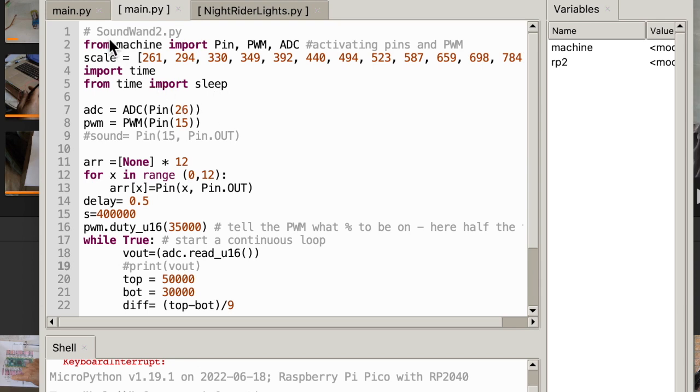Well, here we see the Thonny program. I called it Sound 1-2. So from the machine, I imported pin. We're going to use pins, pulse width of modulation and analog digital conversion. Then I, in an array, put the scale of notes C, D, E, F, G, A, B, C, D, E, F, G. So it started with middle C and there were the frequencies of each note.